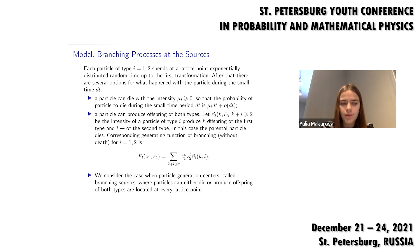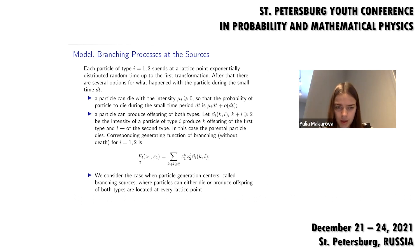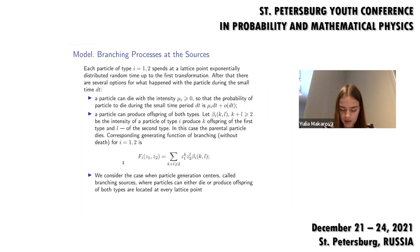For our intensities beta_{i}, we have the following generating function f_{i} for each type i, which can be either one or two. As part of the topic of branching processes in a homogeneous environment, we assume that at every lattice point there is a particle generation center, which can also be called a branching source — the point where particles can either die or produce offspring.